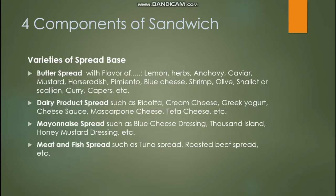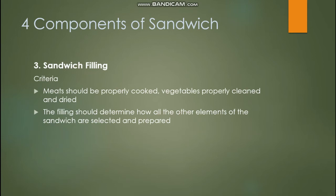Examples of sandwich spreads include flavored butter, mayonnaise-based spreads, spreadable cheeses, tahini, jams, and condiments. Butter spreads can be flavored with lemon, herbs, anchovy, caviar, mustard, horseradish, pimiento, blue cheese, shrimp, olive, shallots, scallion, curry, or capers. Dairy product spreads include ricotta, cream cheese, Greek yogurt, cheese sauce, mascarpone, and feta cheese. Mayonnaise-based spreads include blue cheese dressing, thousand island, and honey mustard. Meat and fish spreads include tuna spread and roasted beef spread.